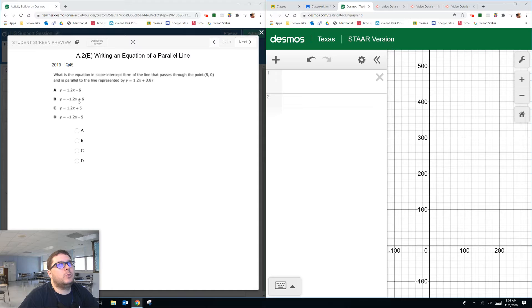And here's why. You have a line right here that you're supposed to be parallel to, and then they give you equations that are supposed to be parallel to it.